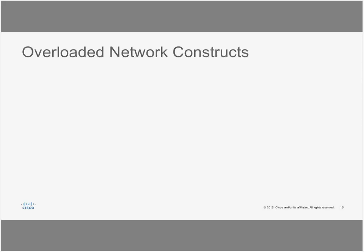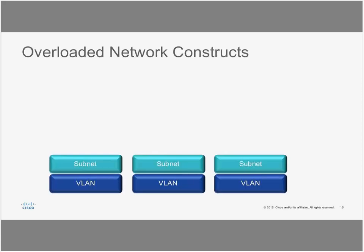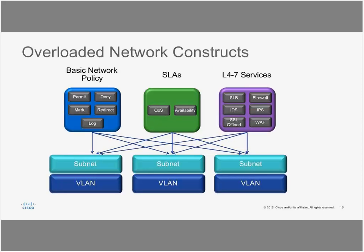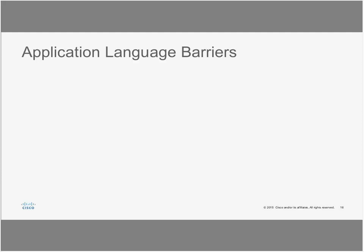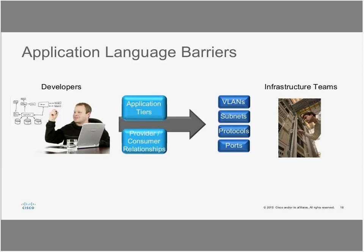Let me give a quick overview of ACI before we deep dive into AVS, the virtual switch for ACI architecture. Currently, the way we do networking is by segregating applications based on VLAN, subnets, with each application having its own requirements for SLAs, QoS, and Layer 4 to Layer 7 services — making it very complex.